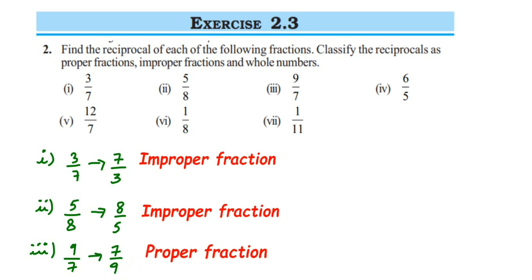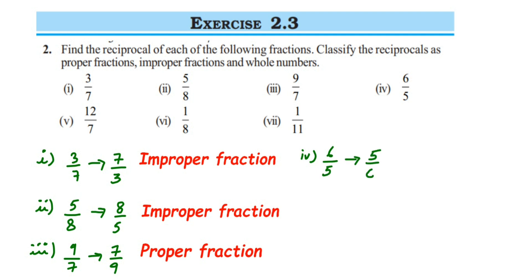The fourth one — we have 6 by 5. We find the reciprocal of 6 by 5, which will be 5 by 6. You can see 5 is smaller than 6, so the numerator is smaller than the denominator. It's again a proper fraction because the numerator is smaller than the denominator. So this one is also a proper fraction.